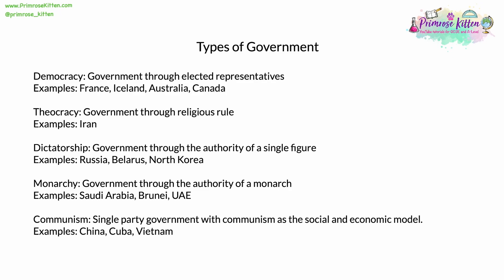Democracy is the government through elected representatives. It's the type of government that we're familiar with here in the UK and is the model of government for much of the Western world, especially Western Europe and North America. Examples of countries with a democratic type of government include the UK, France, Iceland, Australia and Canada. Democracies tend to have a very high regard for human, individual and civil rights.